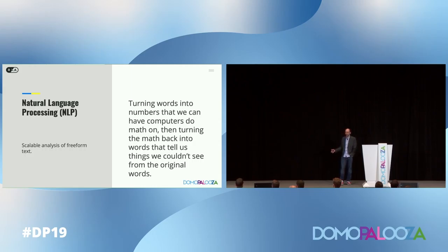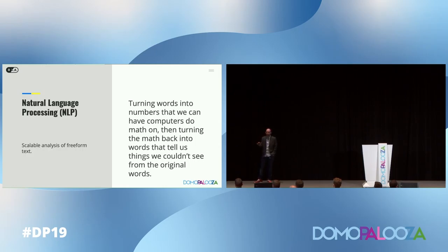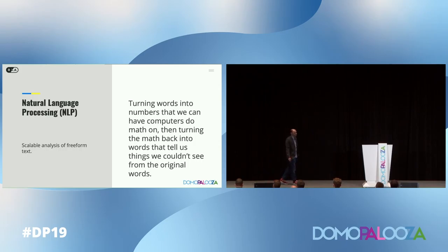There are a lot of definitions of natural language processing — you can talk about tokenizing terms, vectorization — but I think of it quite simply as: you have words and sentences, and you want to translate them into numbers, so that from those numbers you can see how closely related things are, how things trend in time, how they relate to other metrics, and then you turn that back into words so you have something that's useful for the human brain to understand. The part of natural language processing we're going to focus on right now is sentiment analysis.